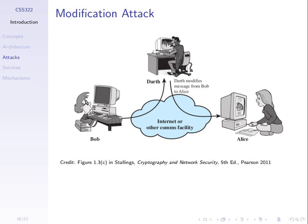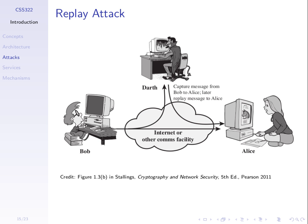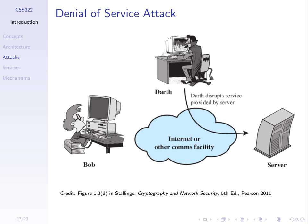In a modification attack, Bob sends a message — for example, decrease Darth's salary by 10,000 baht. Darth intercepts it, changes 'decrease' to 'increase', and forwards the modified message to Alice. Unlike a replay attack, where the message is an exact copy of a previous one, a modification attack alters the content of the message in transit.